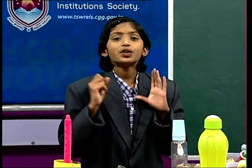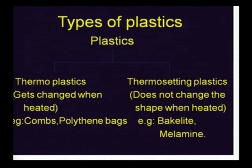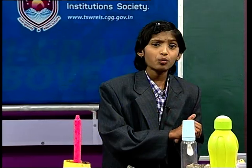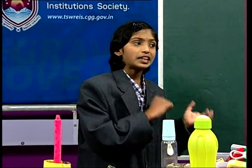Do you know the types of plastics? There are two types of plastics. The first one is thermoplastic and the second one is thermosetting plastic. Thermoplastic gets changed when heated. Thermosetting plastic does not change shape when heated. Examples of thermoplastic are combs and polythene bags. Examples of thermosetting plastics are bakelite and melamine.